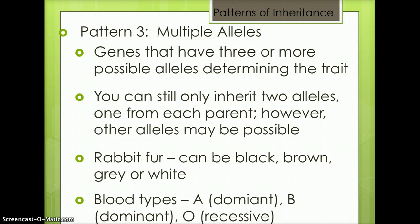Another example is blood type. There are three alleles for blood type: A, which is dominant; B, which is dominant; and O, which is recessive. Therefore, a person can have the blood type A, B, AB, or O.